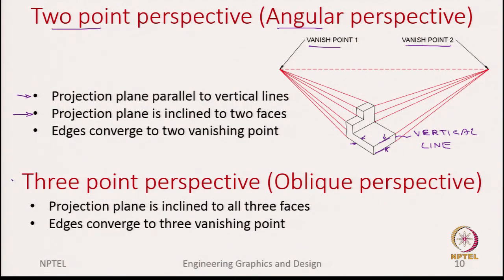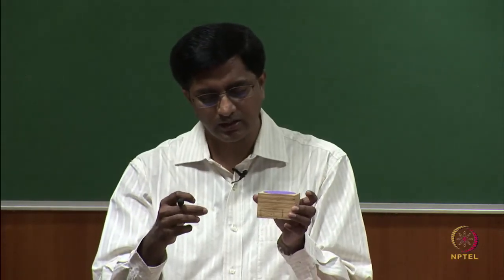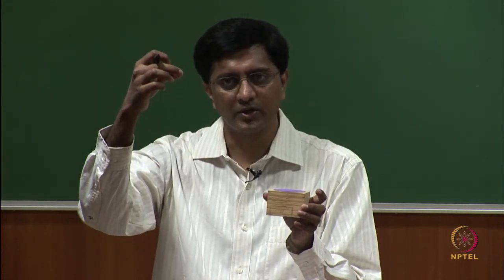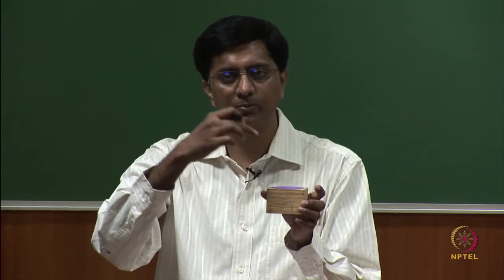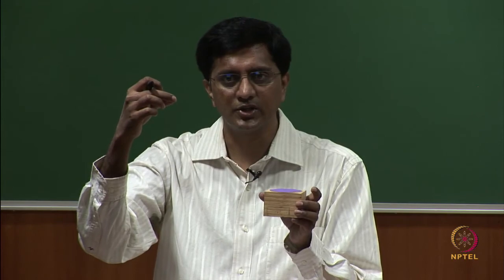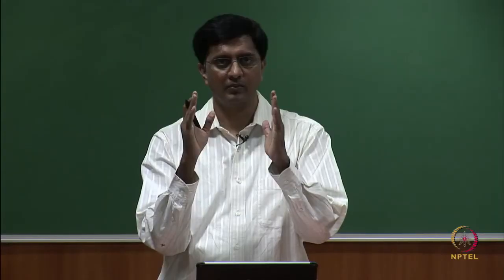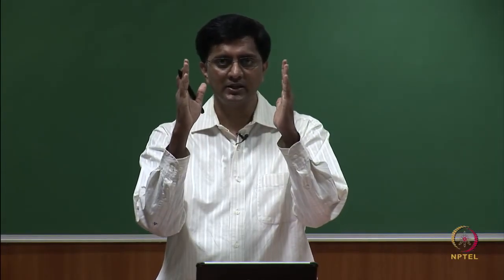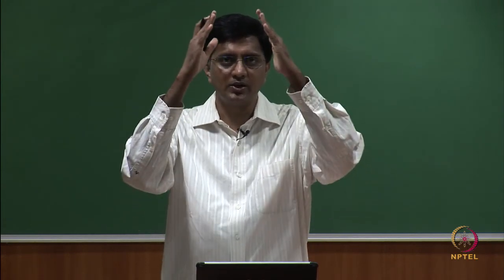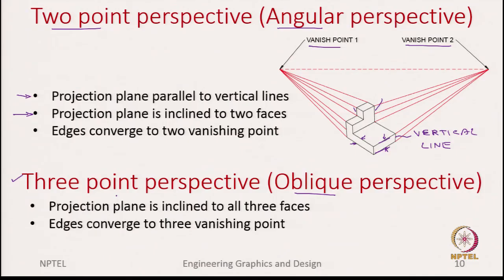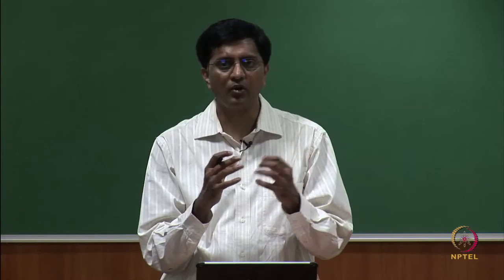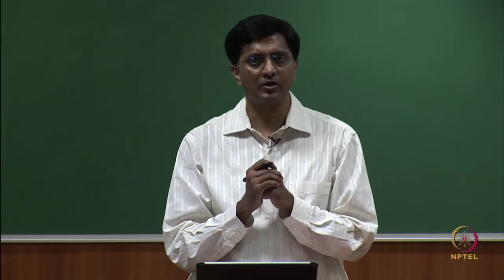The third type is three-point perspective, also called oblique perspective. Imagine taking a drone and looking at a building from the top, seeing the front, side, and top faces. In two-point perspective, vertical lines are all parallel, but in three-point perspective these vertical lines are inclined and converge into a third vanishing point. Perspective drawings are most realistic and are mainly used in architectural drawings.